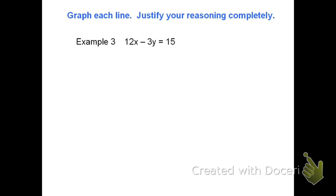This last example looks different. It's not in the form y equals mx plus b. The x and y are on the same side. Looking at it, I cannot tell you what the slope and y-intercept is. I'll need to rewrite it in slope-intercept form, which means getting y by itself.